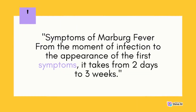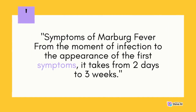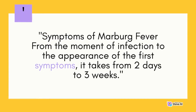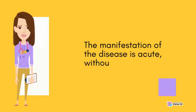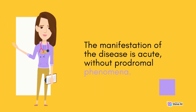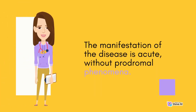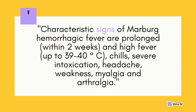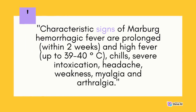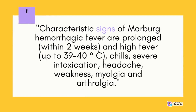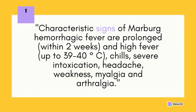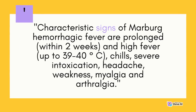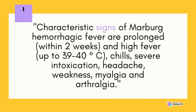From the moment of infection to the appearance of the first symptoms, it takes from two days to three weeks. The manifestation of the disease is acute, without prodromal phenomena. Characteristic signs include prolonged high fever up to 39 to 40 degrees Celsius lasting within two weeks, chills, severe intoxication, headache, weakness, myalgia, and arthralgia.